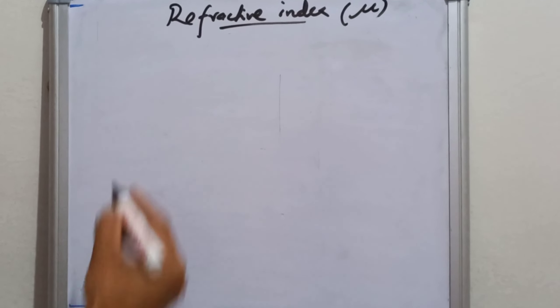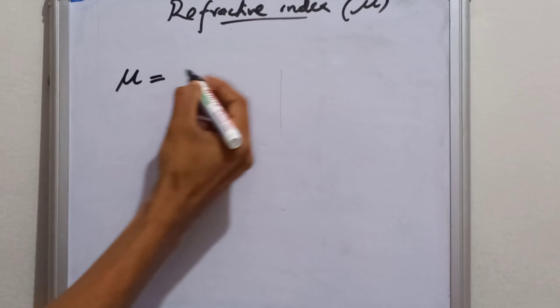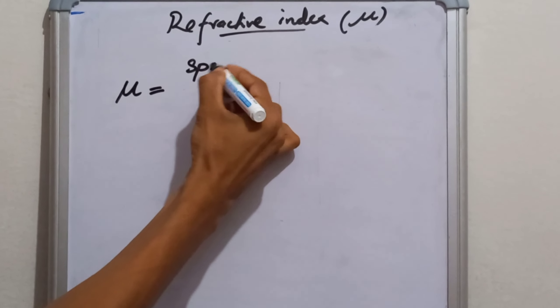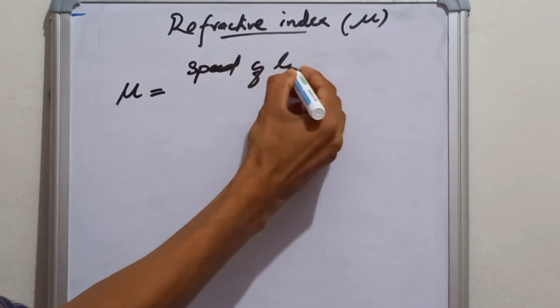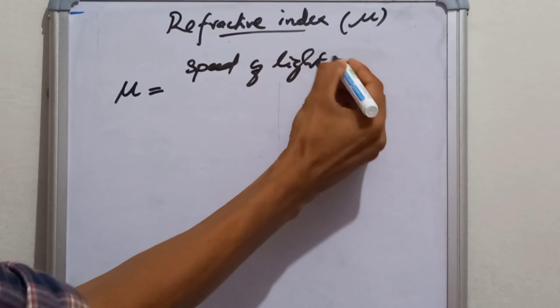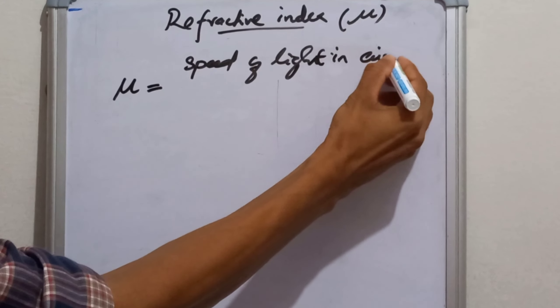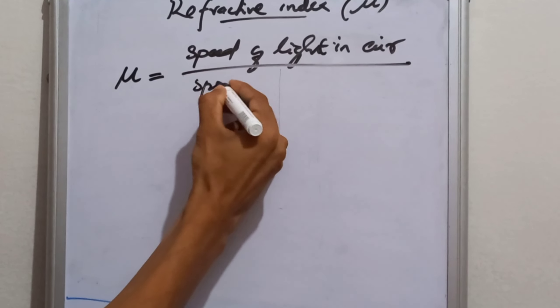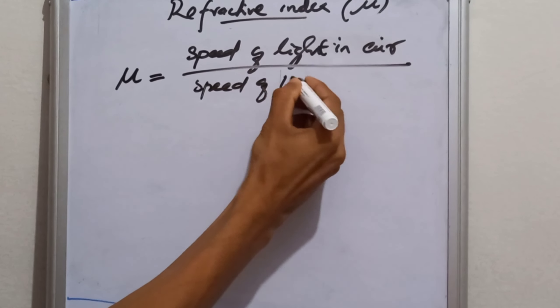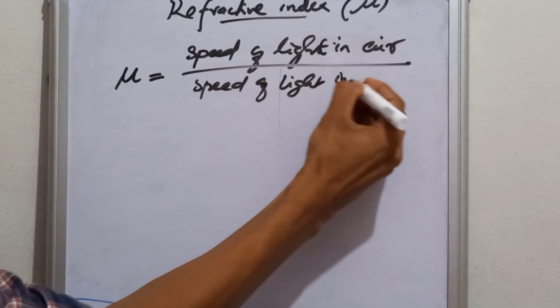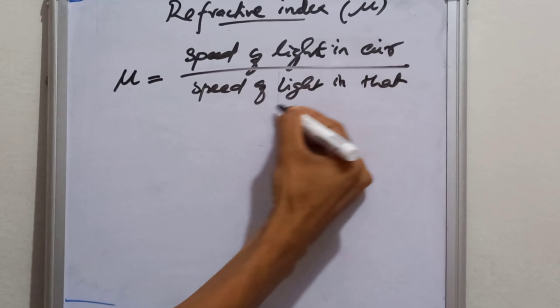As per the definition of refractive index, refractive index is equal to the speed of light in air divided by the speed of light in that particular medium.